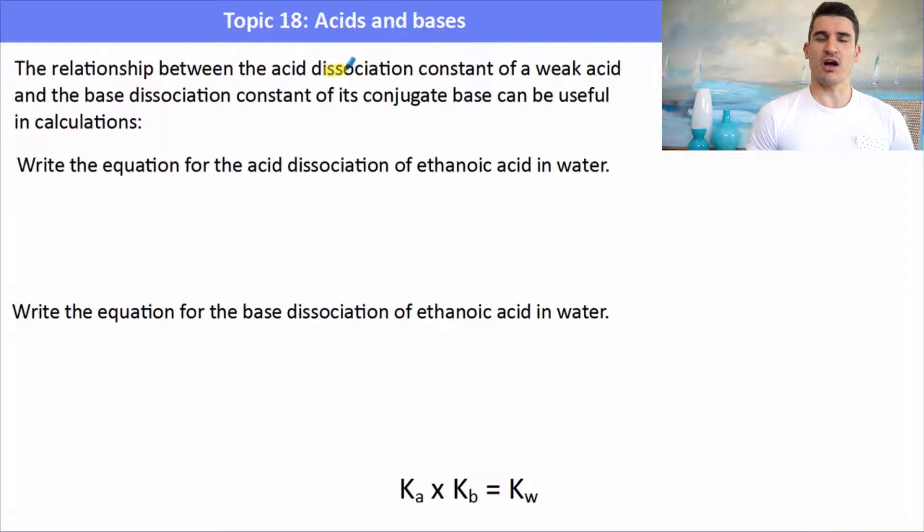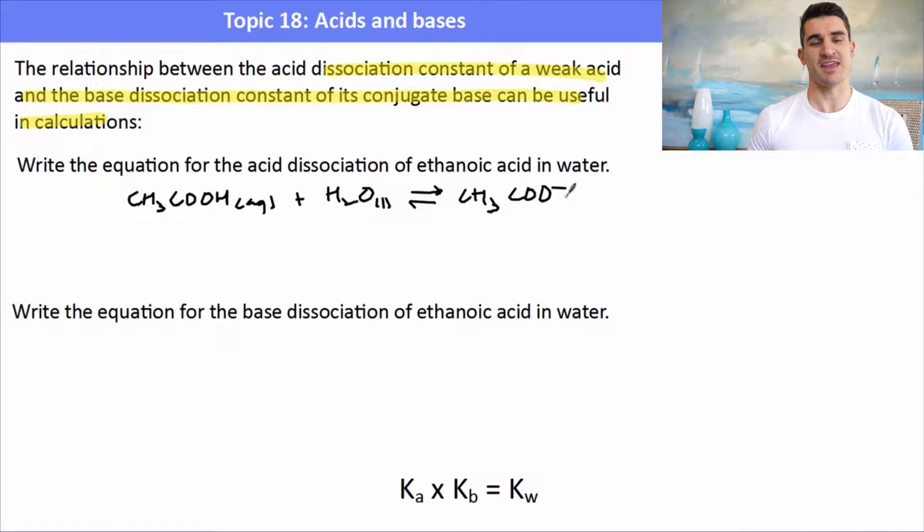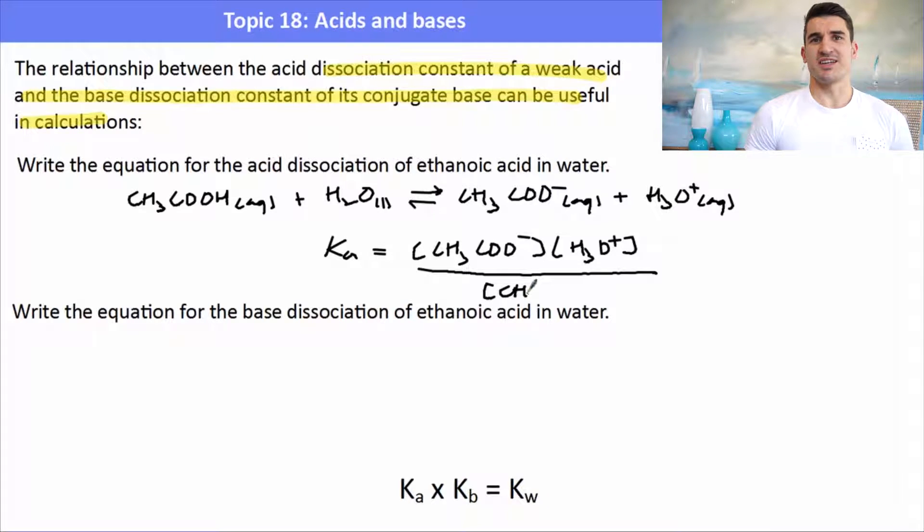Now this is derived because we have a dissociation constant for a weak acid and a dissociation constant for a weak base, and those two things can be useful when we do calculations. So for example, if we wanted to write the Ka value of ethanoic acid, we would show that it ionizes in water to form H3O plus and then the ethanoate ion, and we can write an equilibrium expression, an acidity constant for that reaction. Remember the acidity constant is the concentration of the products divided by the concentration of the acid; we omit water because it's said to be constant. So the acidity constant is easily found.